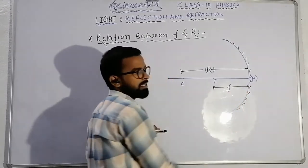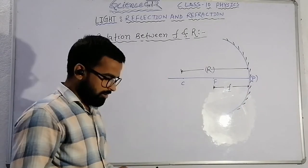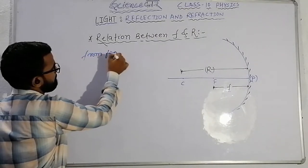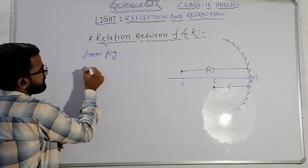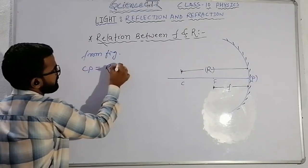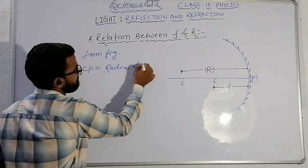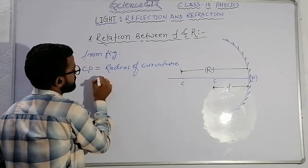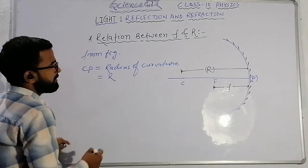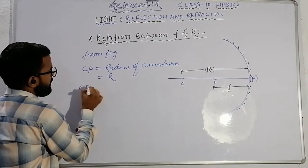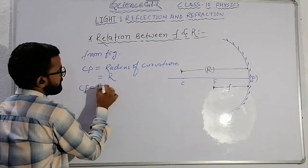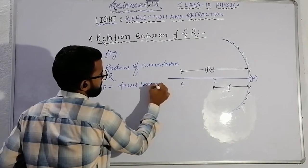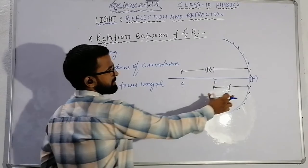The distance between the principal focus and the pole is called focal length. From the figure, we can write: CP is equal to radius of curvature, that is R, and CF is equal to FP, which is equal to focal length.